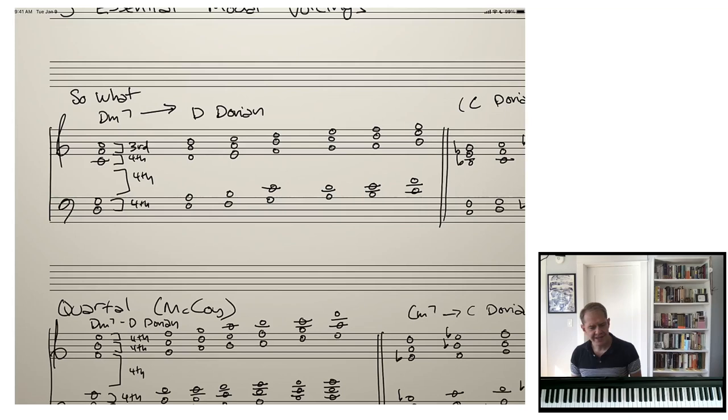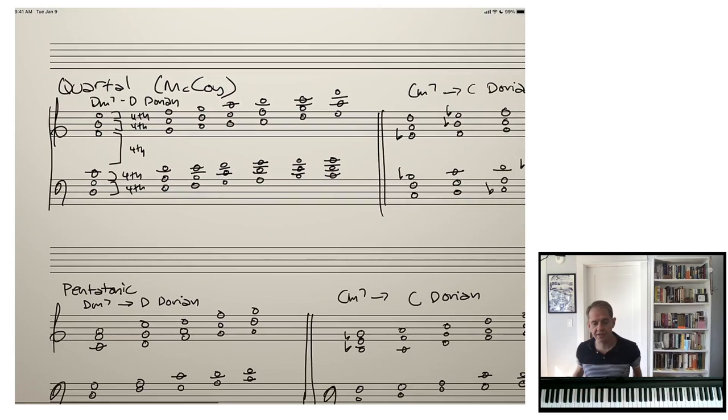Our second essential modal voicing is the quartal voicing, and this is what's most associated with McCoy Tyner. This can be up to six notes. The So What voicing you might notice was five notes; the quartal voicing - that most powerful McCoy sound - is actually a six-note voicing, three in each hand. Let me back up to the So What because that leads me to my point: I prefer to play the three notes in the right hand, so I always kind of have a triad of some sort in my right hand. I don't know for a fact what Bill Evans did, but my preference is three in the right, two in the left. With the quartal, you really need three in each hand.